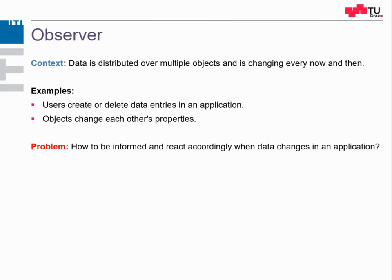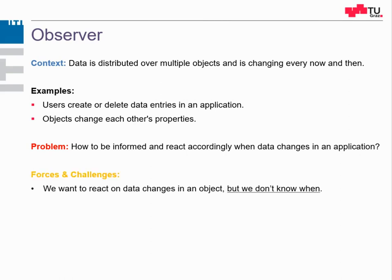Why is this difficult? The first difficulty is we want to react on data changes in objects, but we don't know when these changes happen. We could program it hard-coded in our source code so that every time an object or a property is changed, we update some other object. But then we are strictly bound to that other object.